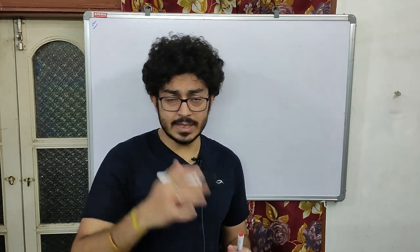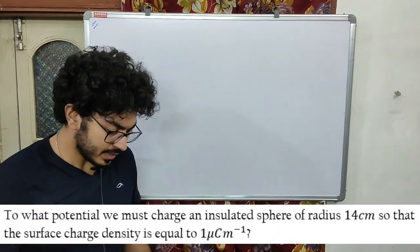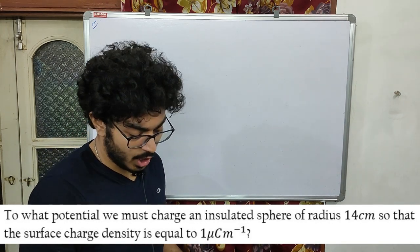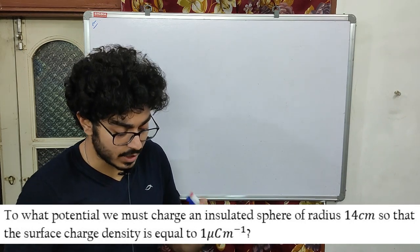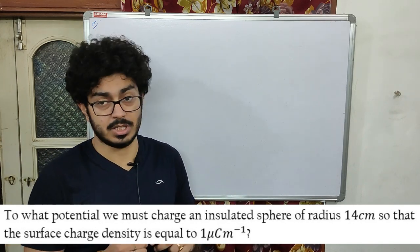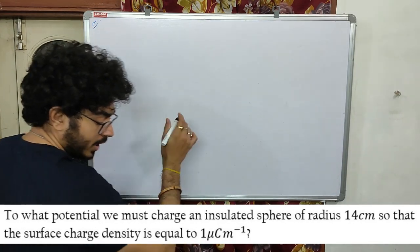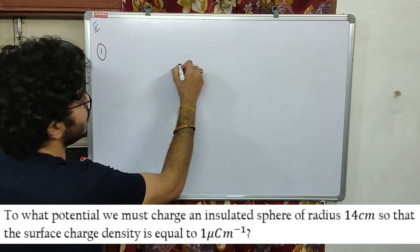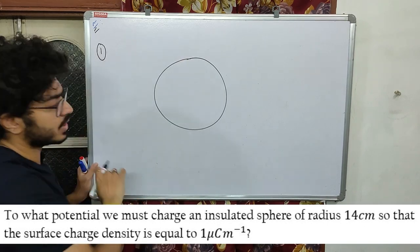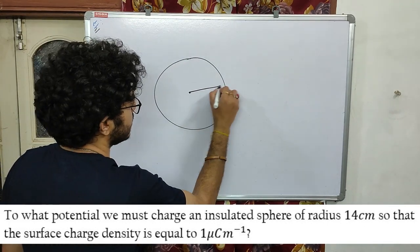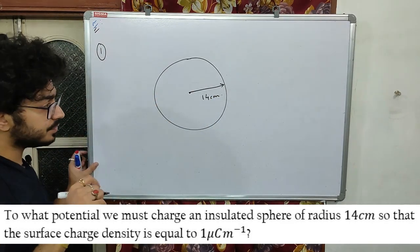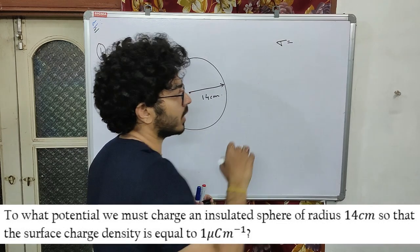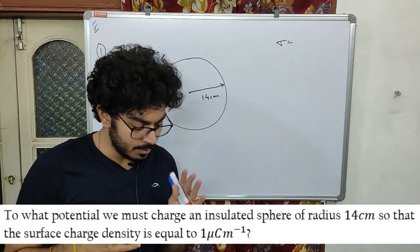Let us see what our first question is. It says: to what potential must we charge an insulated sphere of radius 4 cm so that the surface charge density is equal to 1 microcoulomb per meter square? The radius of the sphere is given as 14 cm. It is talking about surface charge density equal to 1 microcoulomb per meter square.